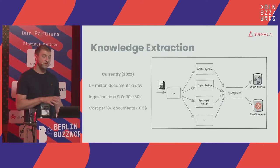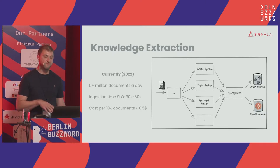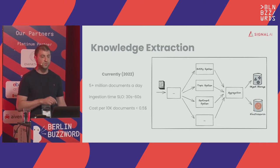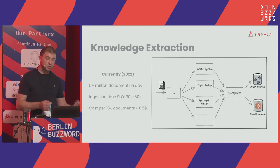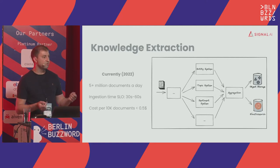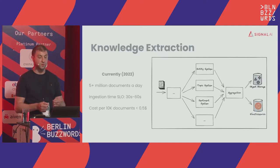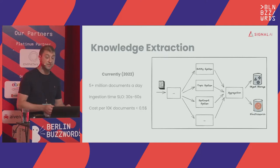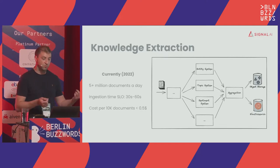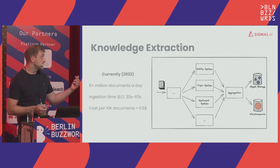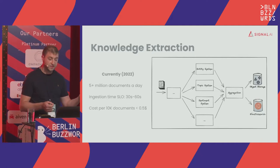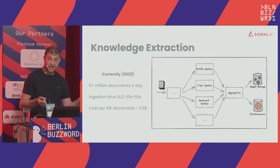Our knowledge extraction platform is composed of a variety of pipelines. Each pipeline is a collection of different services, and services can be logically grouped into what we call systems. Every system is responsible for extracting a specific type of metadata — so we have the sentiment system, the topic system, and the entity system.